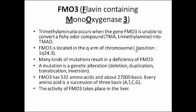FMO3 is located in the Q arm of chromosome 1, more exactly at position 1q24.3. Many kinds of mutations result in a deficiency of FMO3. A mutation is a genetic alteration — it could be a deletion, duplication, translocation, or an inversion. The FMO3 gene has 532 amino acids and about 27,000 base pairs.